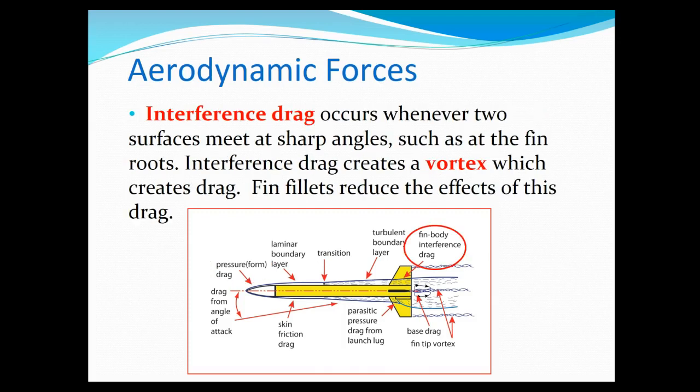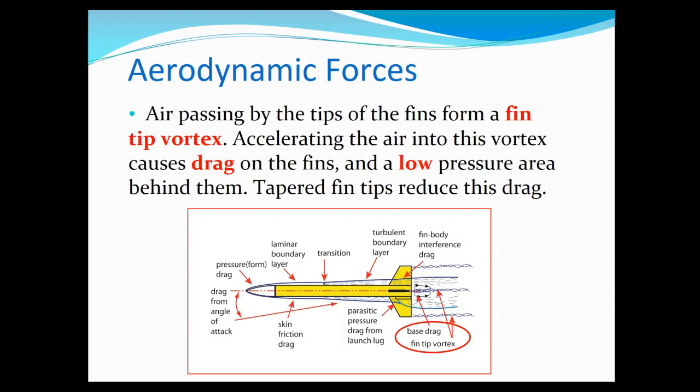Interference drag comes from things that kind of stick out of the main body. Your hand sticking out of the window of the car. For a rocket, things that stick out and cause interference drag are fins and the launch lug. We want to make sure that when we create that launch lug or buy a launch lug that it is aerodynamic. Little things can make a lot of difference. We want these things to be as smooth as possible to reduce our drag.